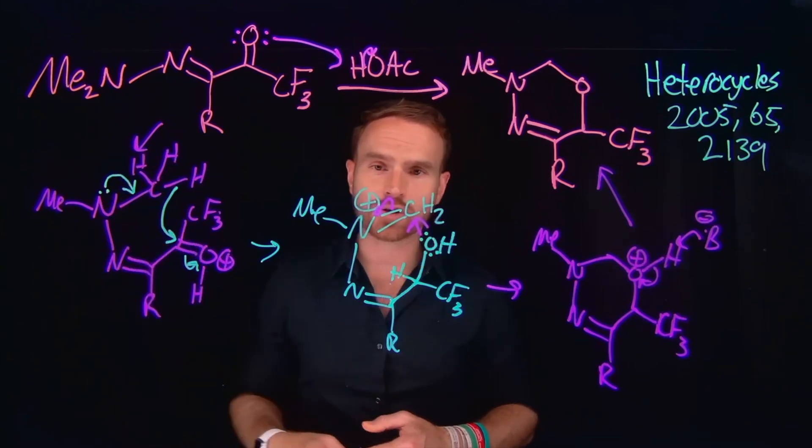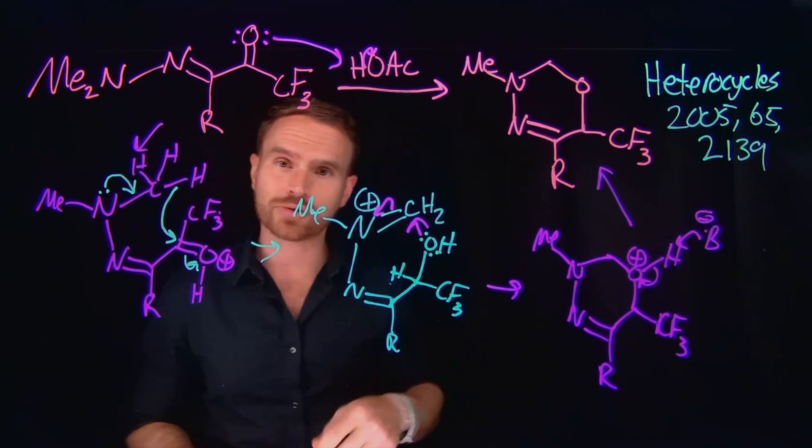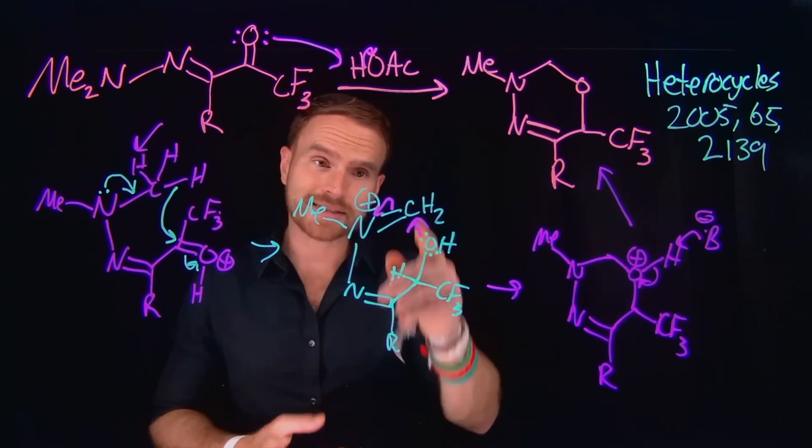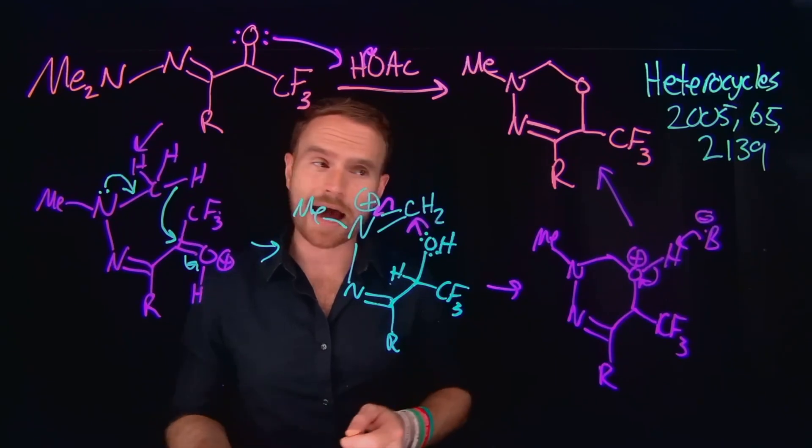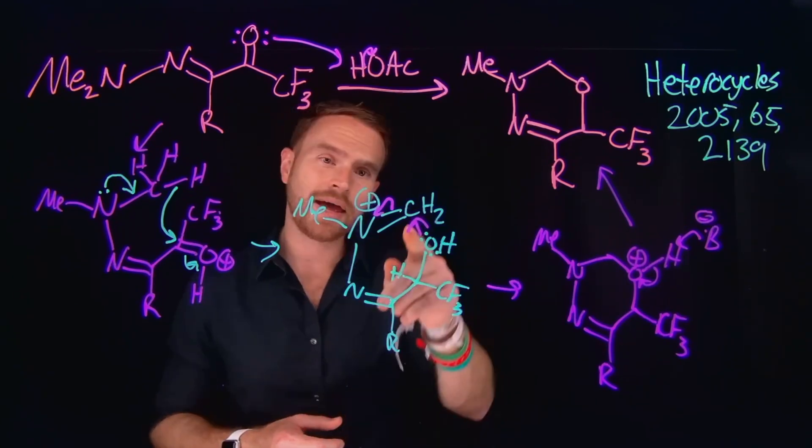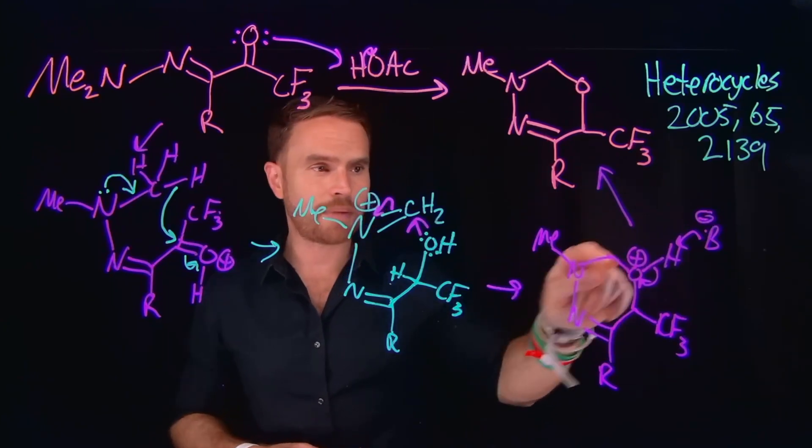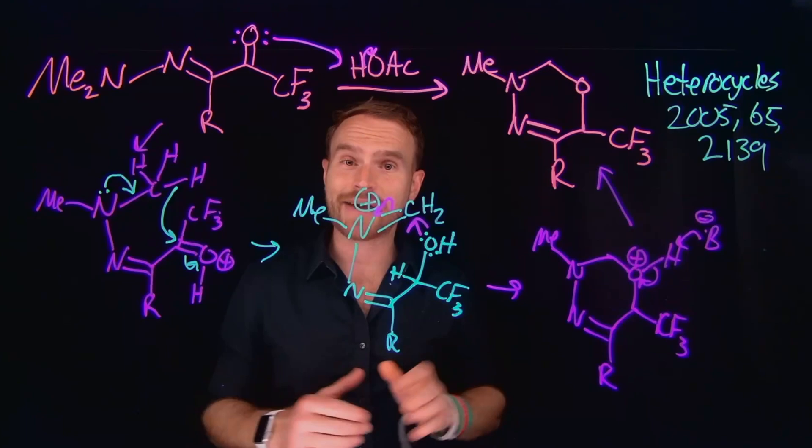Where you have a carbon to nitrogen double bond, and the nitrogen is positively charged. This, again, makes that neighboring carbon susceptible to nucleophilic attack by even something like an alcohol, which will come and close the ring, kicking over the pi electrons, giving us a neutral nitrogen, but now a positively charged oxygen, which can undergo a simple proton transfer to get that final heterocycle.